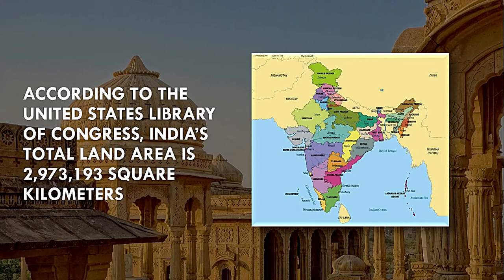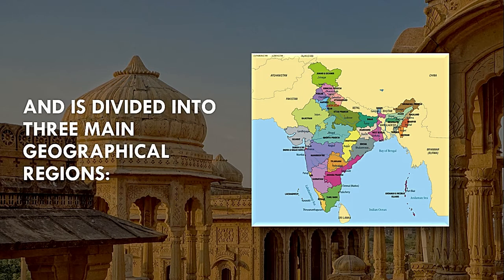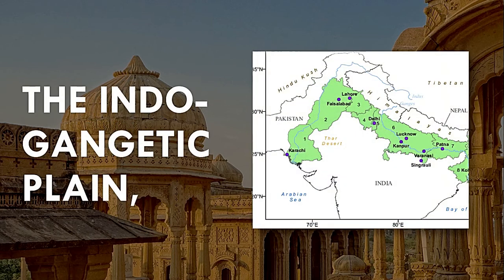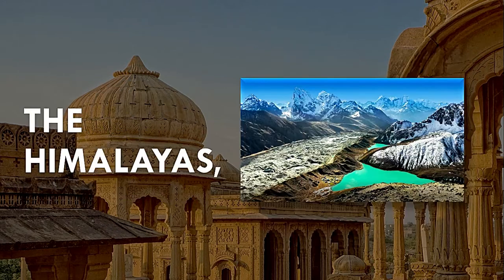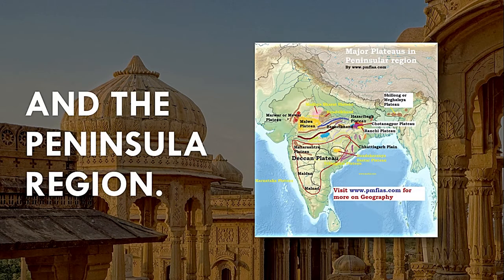According to the United States Library of Congress, India's total land area is 2,973,193 square kilometers and is divided into three main geological regions: the Indo-Gangetic Plain, the Himalayas, and the Peninsula region.